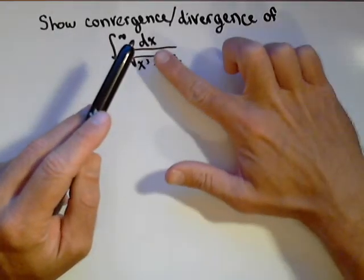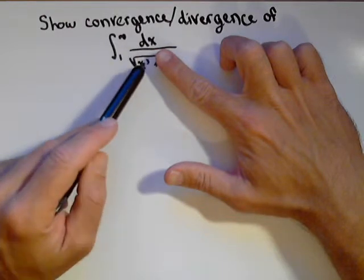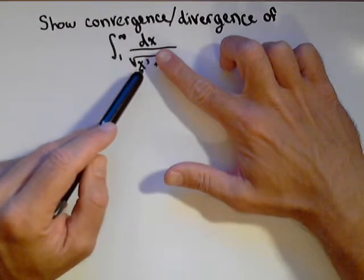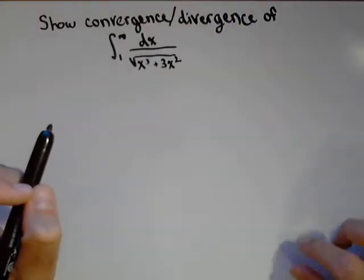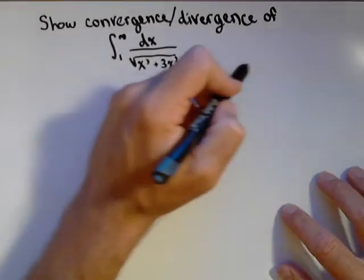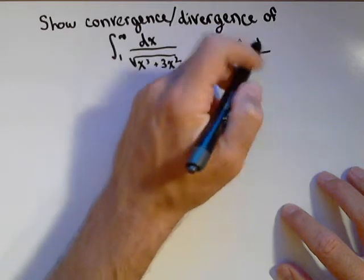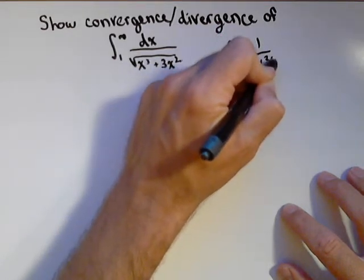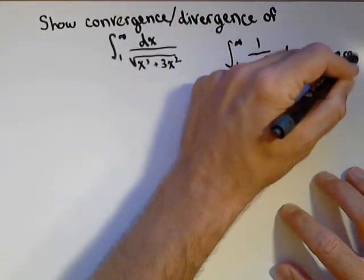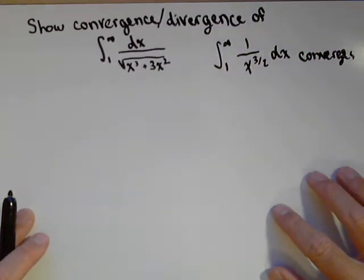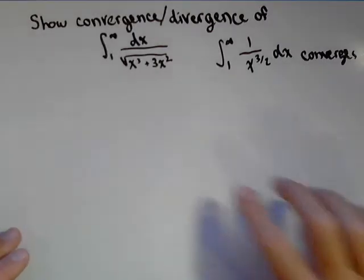With polynomials, what we do is we can say, well, it's dominated by its lead terms. So, x cubed dominates the denominator. So, this thing's gonna act very similar to one over square root of x cubed. So, we need to think about what square root of x cubed does. Well, we know that the integral from one to infinity of one over x to the three halves dx converges. We just saw that on our previous slide.